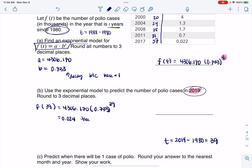I'm going to put this is going to be 0.024. And this is thousands of polio cases.